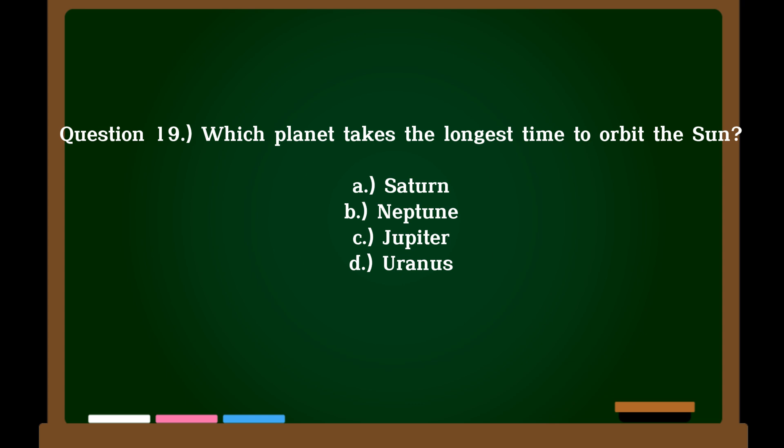Question 19. Which planet takes the longest time to orbit the sun? A. Saturn, B. Neptune, C. Jupiter, D. Uranus. Correct answer: B. Neptune.